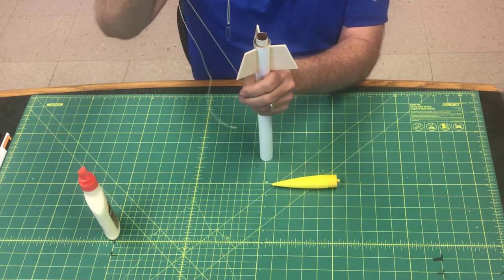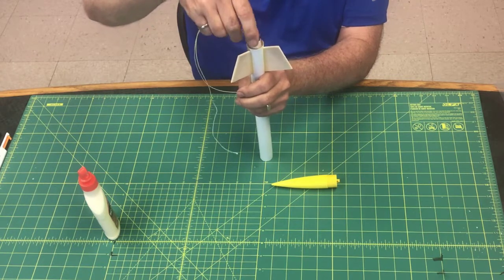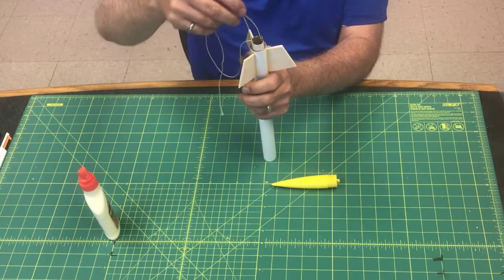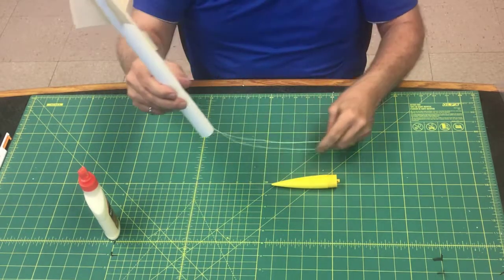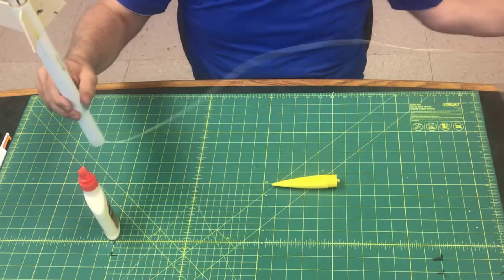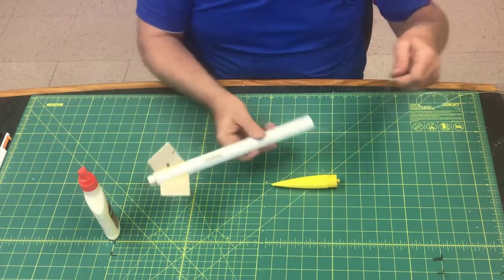There you go. When the paper clip comes out the other end, you pull it out, and there's your rocket with your shock cord coming out the top. All right, that's all good.